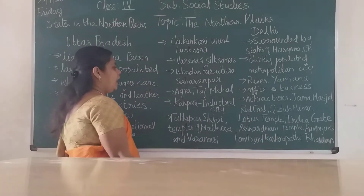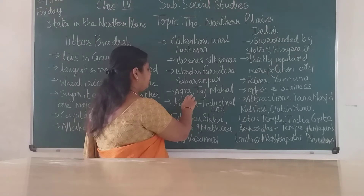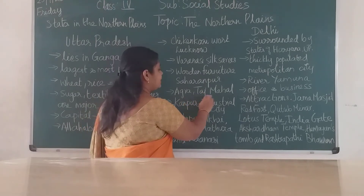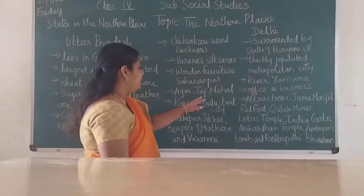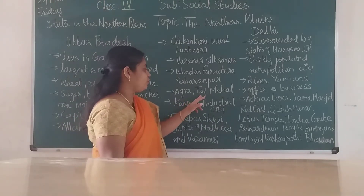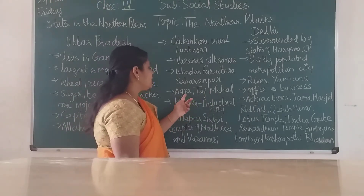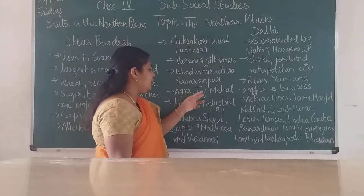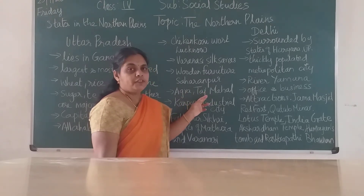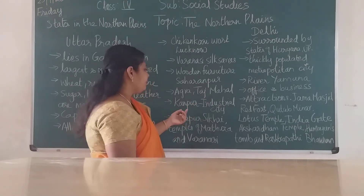In Uttar Pradesh, you have the well-known Taj Mahal, built by Shah Jahan in memory of his wife Mumtaz. Taj Mahal is located in Agra — it is world famous and one of the Seven Wonders of the World.